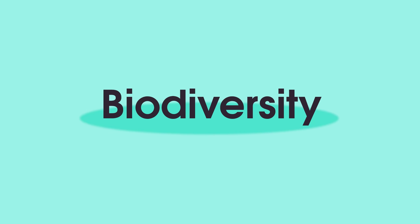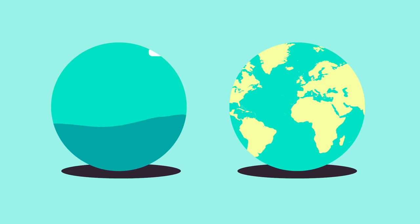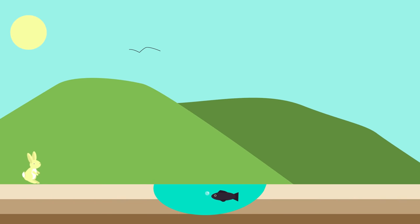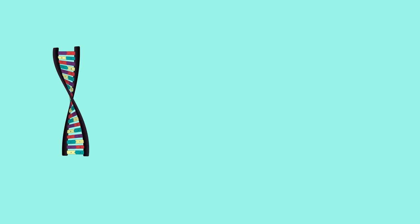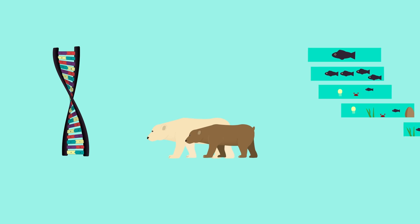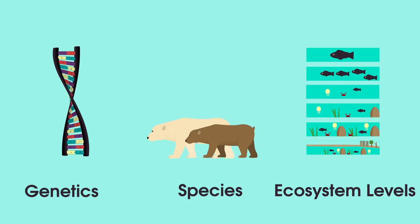Biodiversity is a key concept in ecology and has importance on both local and global scales. Biodiversity is the degree of variation of life, or put more simply, the number of different individuals and life forms in an area. Scientists usually measure biodiversity on either genetic, species, or ecosystem levels.